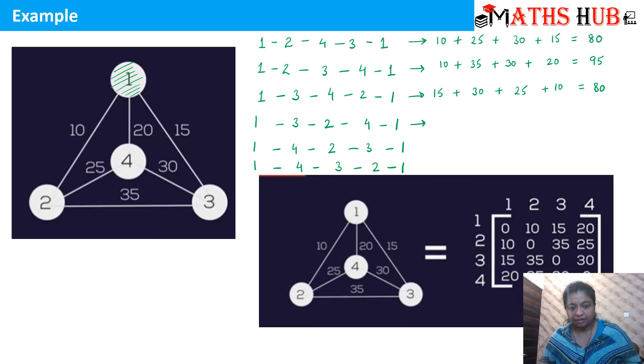Next: 1 to 3 is 15. 3 to 2 is 35. 2 to 4 is 25. 4 to 1 is 20. So this comes out to be 35 plus 15, 50. 50 plus 20 is 70. 70 plus 25 is 95.